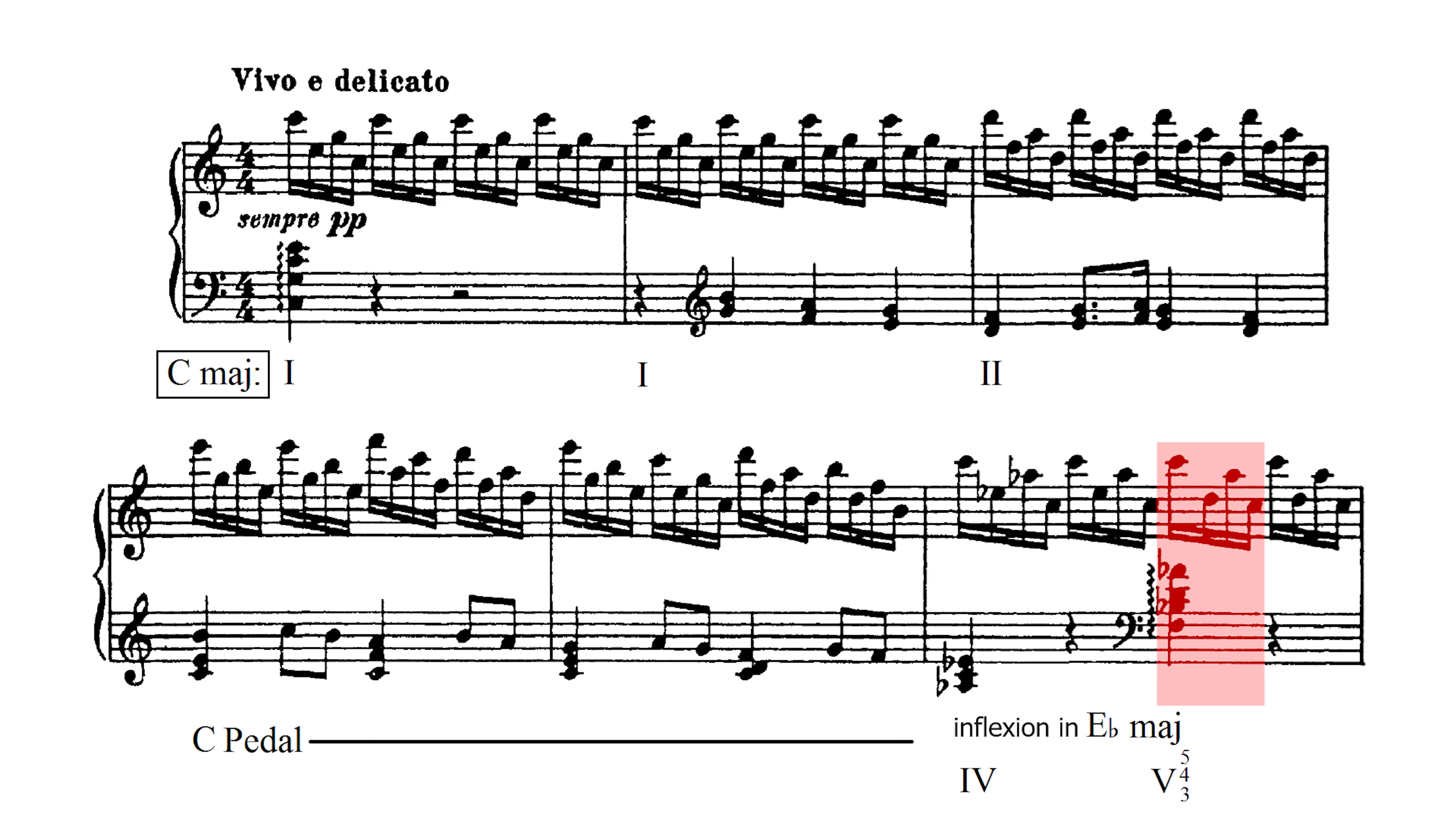The next chord has F in the bass, Bb and D can be viewed as coloring notes. Also take a look at the bass, we have C followed by Ab and then F. It moves in skips of thirds. The next chord is C major again, so the F kind of facilitates a plagal cadence feeling, which Prokofiev will use later.